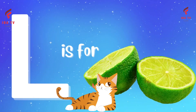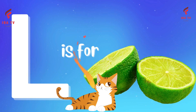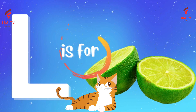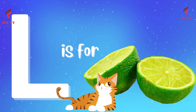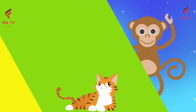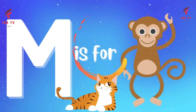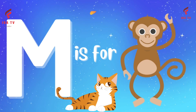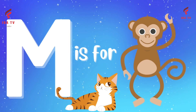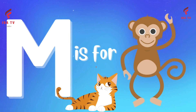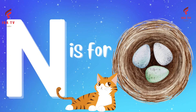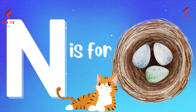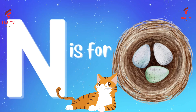L, L is for Lemon. Lemon means Limu. M, M is for Monkey. Monkey means Gender. N, N is for Nest. Nest means Gonsla.